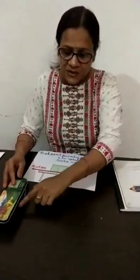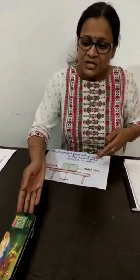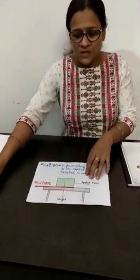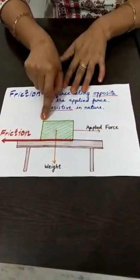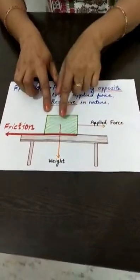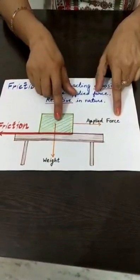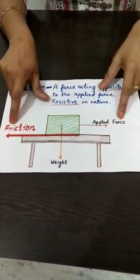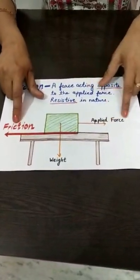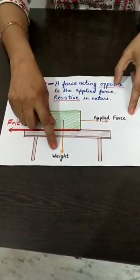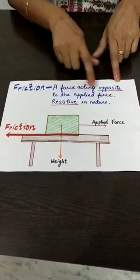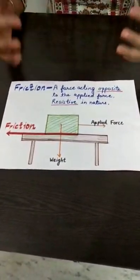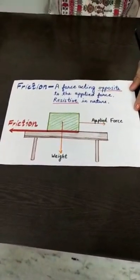To understand more about friction, we have this diagram. This object is placed over a table. When I apply force on this box to the right, friction will act between the two surfaces in the opposite direction. So friction is always opposite to the motion. If we apply force on one side, the friction acts along the contact surface opposing that force. If we increase the applied force, the friction also increases up to a certain limit. The weight acts downwards. Friction is resistive in nature because it opposes the motion.